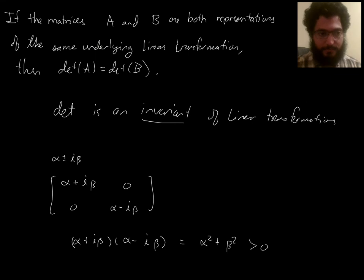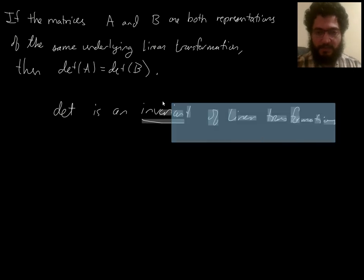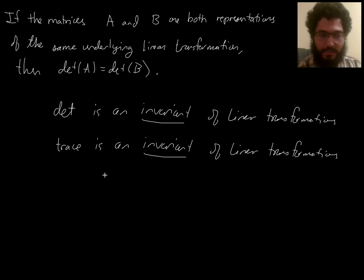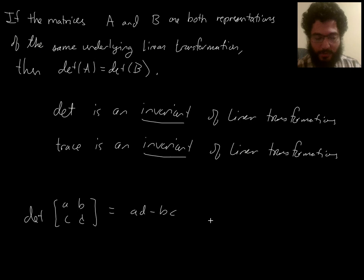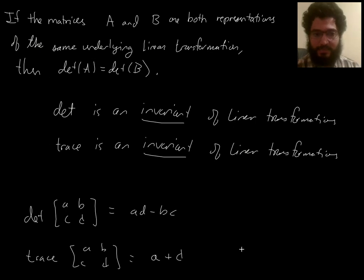Now enter the trace. You've seen that the determinant is an invariant of linear transformations. There's another invariant that's less talked about but is also very neat and important — it's called the trace of a matrix. You know the determinant of a 2×2 is AD − BC. The trace is just the sum of the things along the diagonal: A + D. That's it. Believe it or not, that is actually invariant under a change of basis.